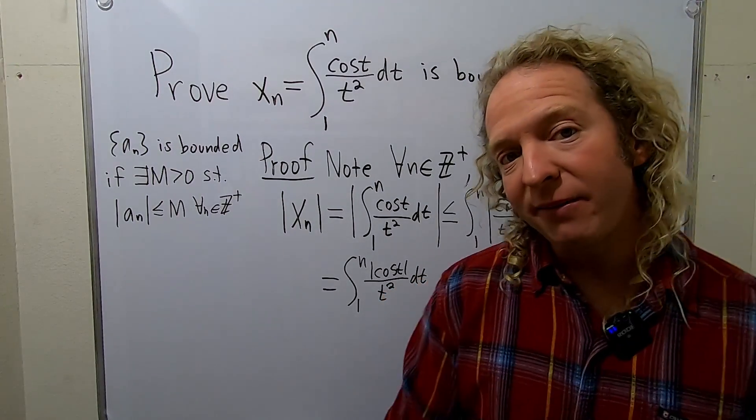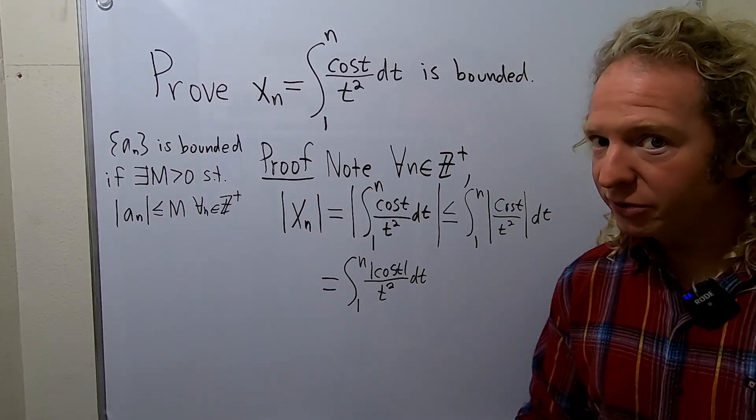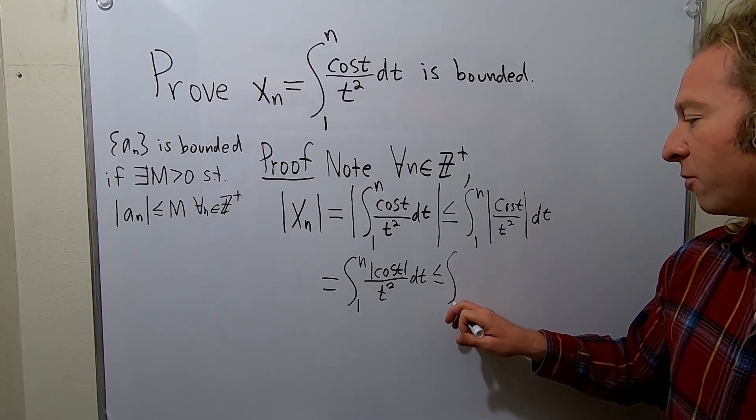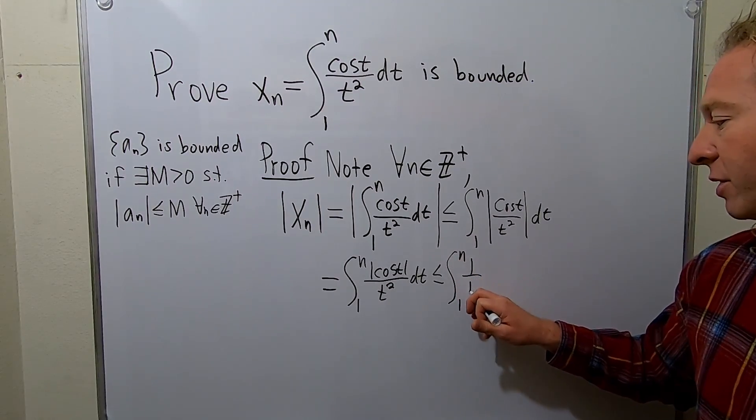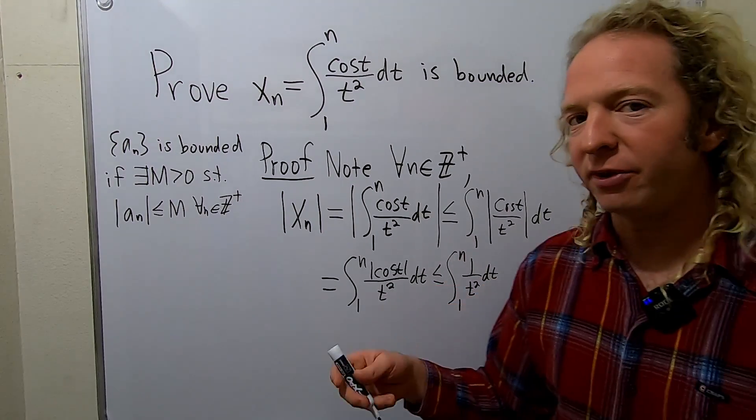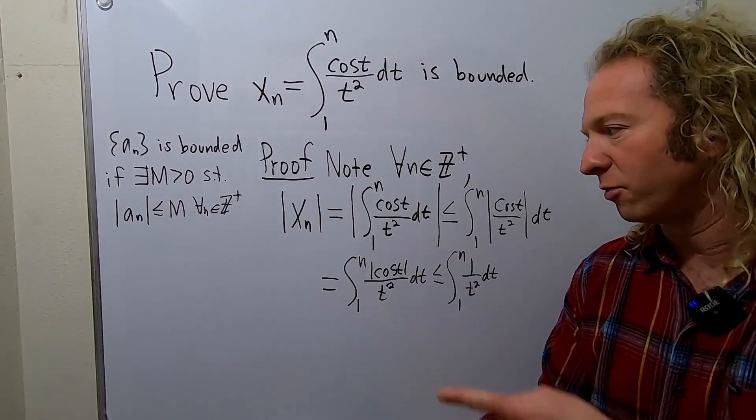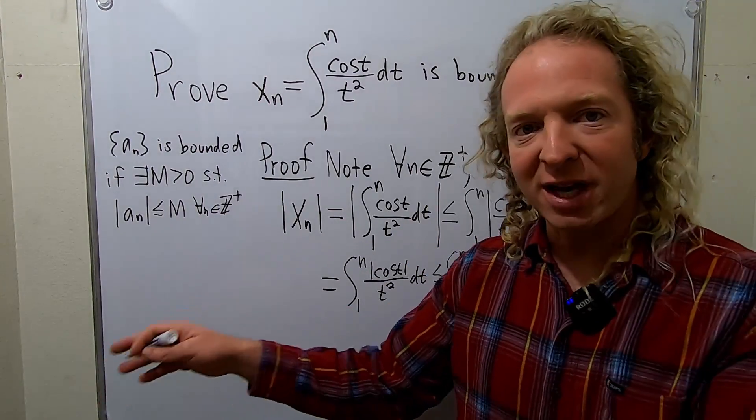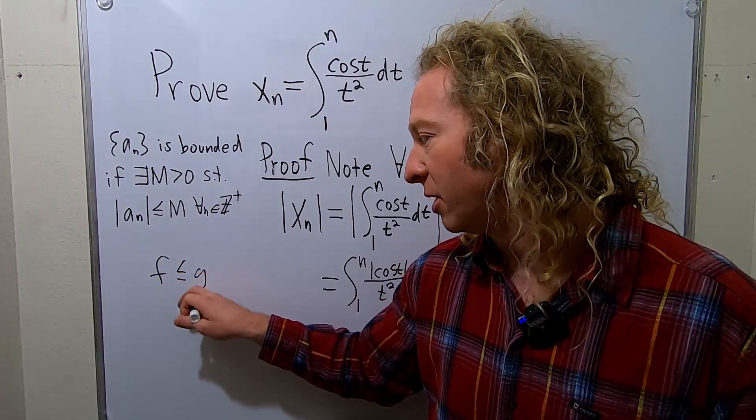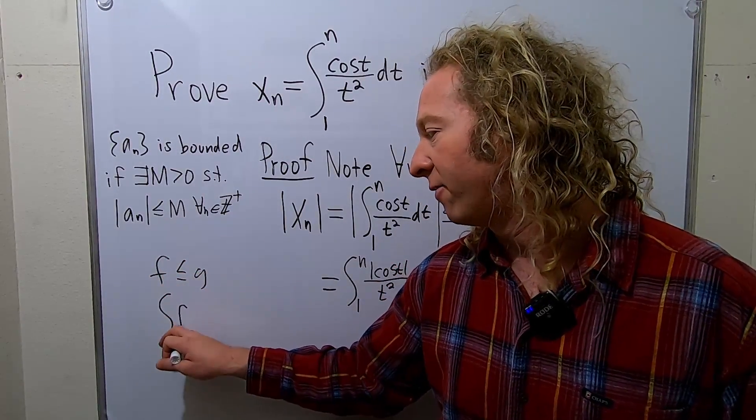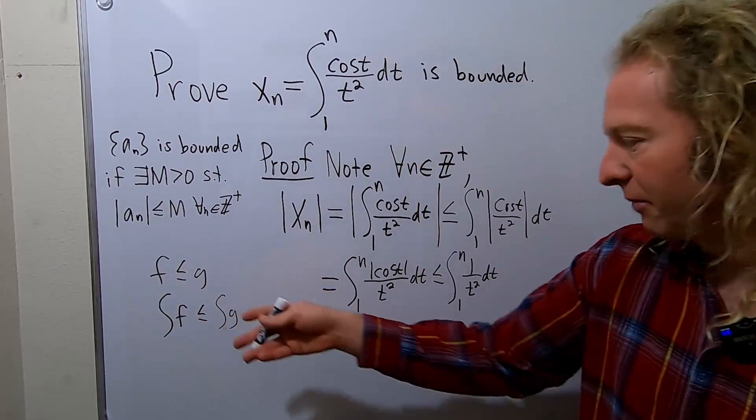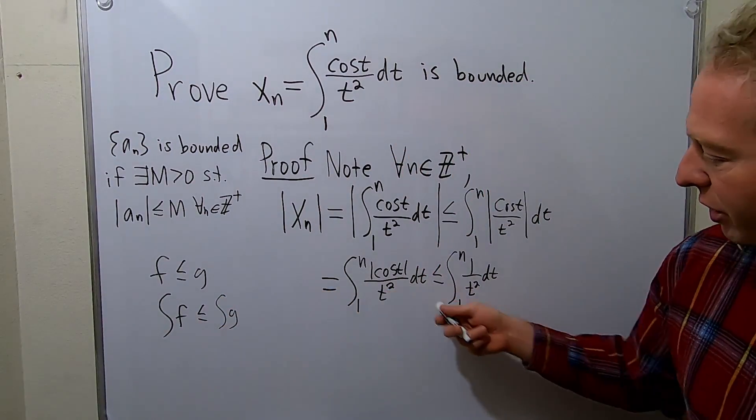Now we know something about the absolute value of cosine. It's less than or equal to 1. So this is less than or equal to the definite integral from 1 to n of 1 over t squared dt. So this is something you can prove. We're using something that you have to prove. If you have f less than or equal to g on some interval, then the integral of f is less than or equal to the integral of g on that interval. So it's something you can prove. So we're using that here.